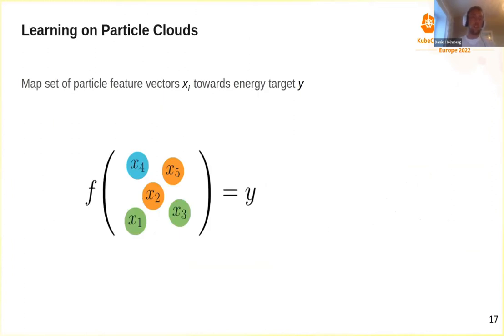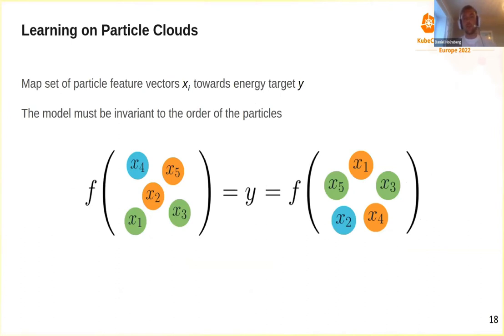To learn on this data, we have particle feature vectors x1 through x5 as an unordered set of particles. We want to map these feature vectors towards a theoretical energy value, where f represents the machine learning model. It also has to obey order invariance — the particles are an unordered set, so the order they come in shouldn't matter when the model maps towards the target energy.